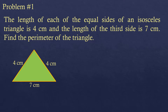Perimeter is simply the total length of the sides of any figure. For this triangle with three sides, to find the perimeter you just add them all. So the perimeter equals four plus four plus seven.